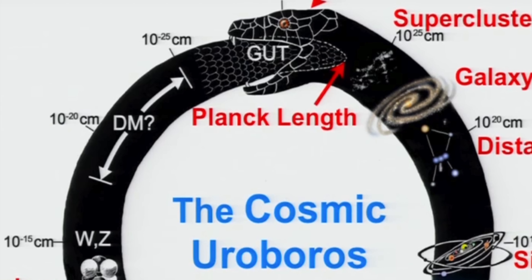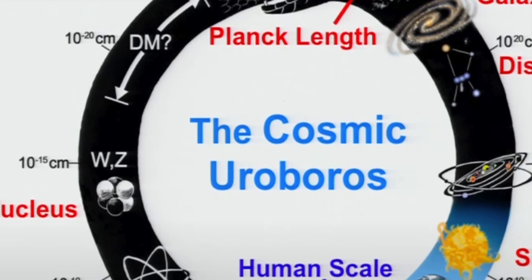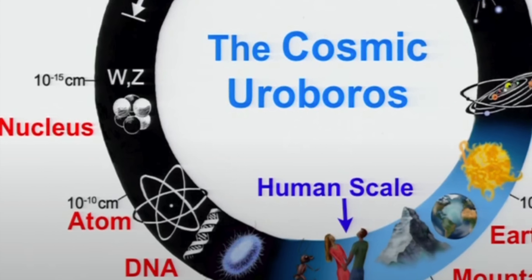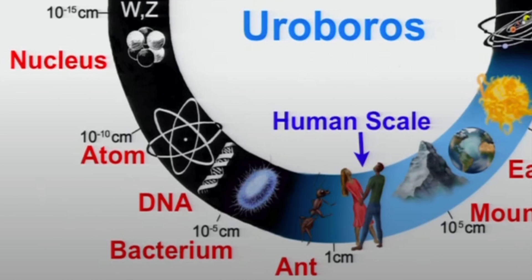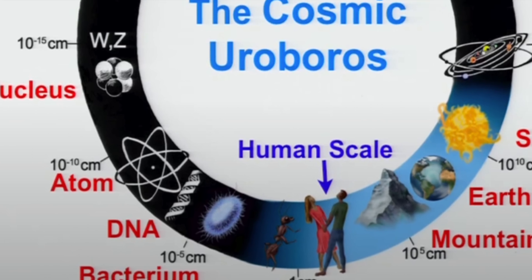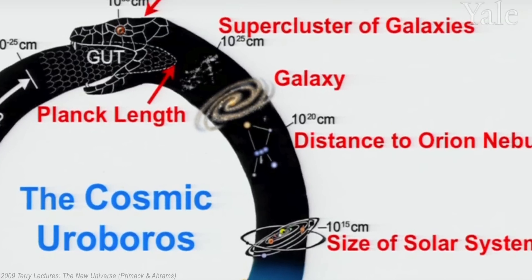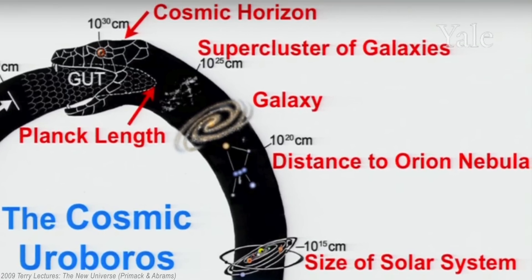Working our way along the serpent, increasing by powers of five, we see elementary particles, atoms, us humans, all the way up to galaxies, superclusters, and finally the head, the entirety of the observable universe.